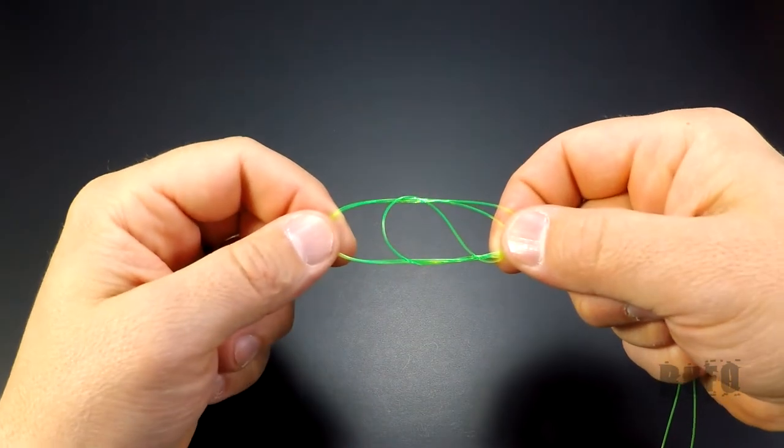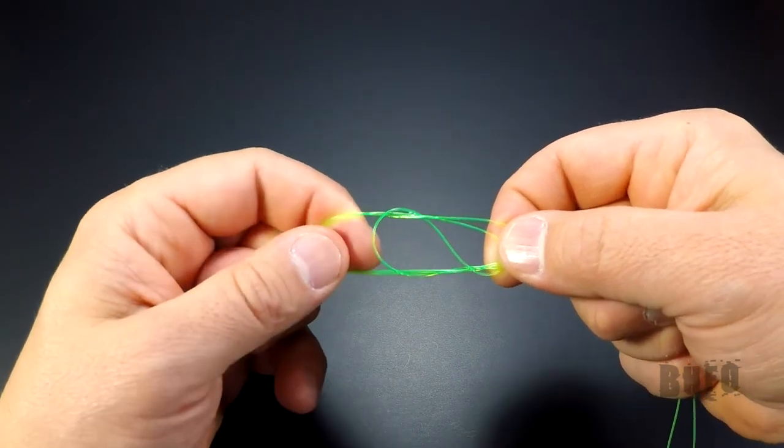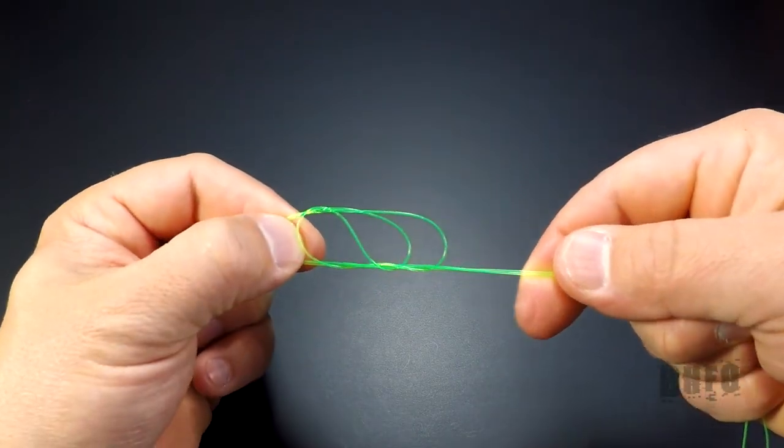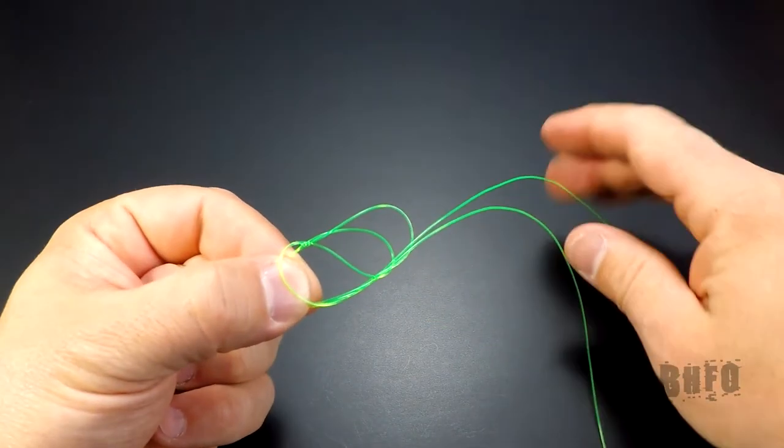After the line has been lubricated it's time to cinch up the knot. Pull the tag and the mainline together keeping the original loop above the hook eye until the knot is nice and tight.